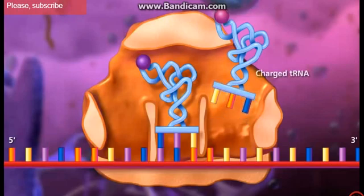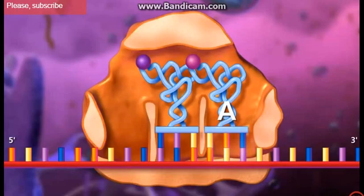A charged transfer RNA molecule binds to the A site and a peptide bond forms between its amino acid and the one attached to the transfer RNA molecule at the P site.